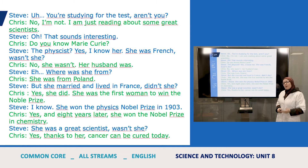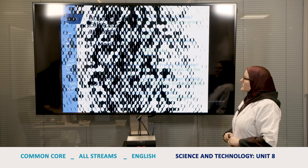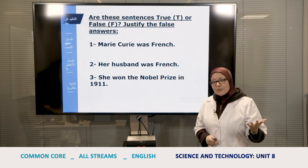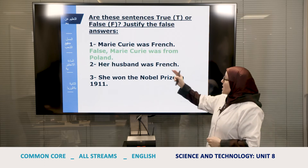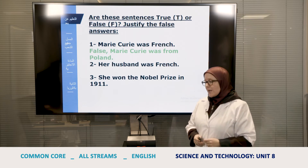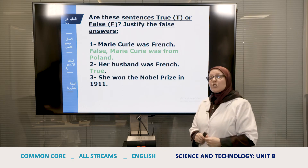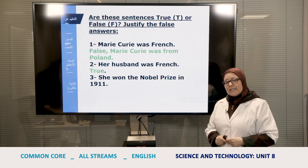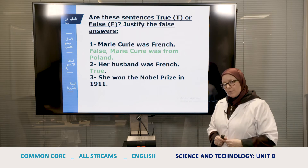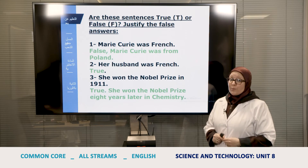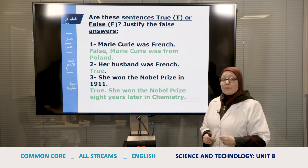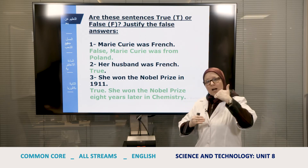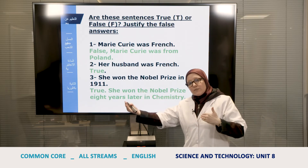So that's the conversation. Let's go back to the questions and answer them. The first one says 'Marie Curie was French' — was she French? The answer is false; Marie Curie was from Poland, not France. The second one: 'her husband was French' — true, her husband was French and she lived with him in France. Number three: 'she won the Nobel Prize in 1911' — this is true. She won the Nobel Prize in chemistry eight years after the first one in 1903; 1903 plus eight gives us 1911.